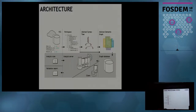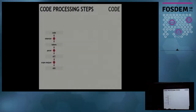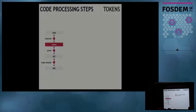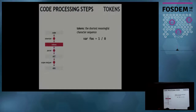The pipeline steps will be familiar if you've played around with a compiler. They start with source code — a sequence of statements. For example, a simple line that declares a variable foo equal to one divided by zero. A tokenizer splits this into tokens: the shortest meaningful character sequences. For 'var foo = 1 / 0', we get six tokens.